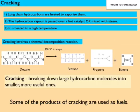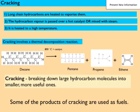They do this by a process called cracking. Our long-chain decane molecule, which has 10 carbon atoms, is broken down into three smaller hydrocarbons: pentane, propene, and ethene. To do this you need to heat it to 800 degrees Celsius and use a catalyst to speed up the reaction, or alternatively you can mix it with steam.